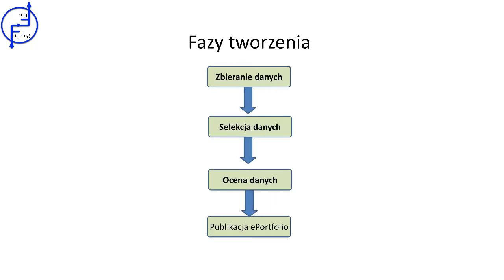Aby stworzyć e-portfolio, należy wykonać serię kroków, które umożliwiają jego odpowiednie ukształtowanie. Najpierw tworzymy przewodnik lub indeks, w którym określone są sekcje zawartości. Następnie tworzymy wprowadzenie, w którym określone są intencje realizowane na końcu e-portfolio. Dalej nadchodzi czas na tworzenie centralnej części e-portfolio, w której wyświetlana będzie dokumentacja wybrana przez studenta. Na końcu znajduje się sekcja zamykająca, która jest podsumowaniem wiedzy ucznia w odniesieniu do treści.